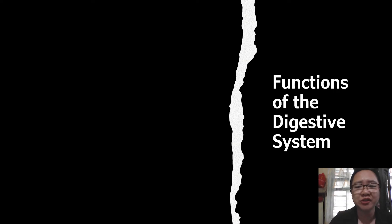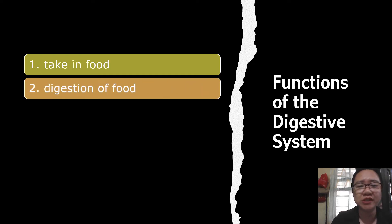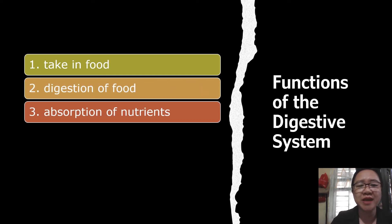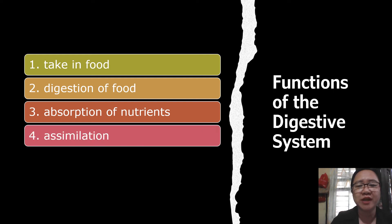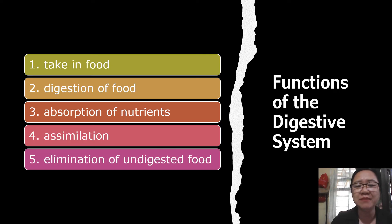Let us now study the different functions of the digestive system. Number one is to take in food. Number two is digestion of food. Number three is the absorption of nutrients. Number four is assimilation — the movement of food molecules into the body cells; for example, amino acids are used to build proteins. And number five is the elimination of undigested food.